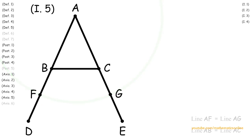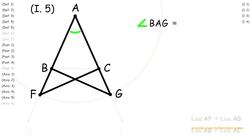Next, with postulate 1, we create line CF and line BG. So looking at triangle ABG and triangle ACF, we can see that they both share an angle in common. Specifically, angle BAG is congruent to angle CAF.